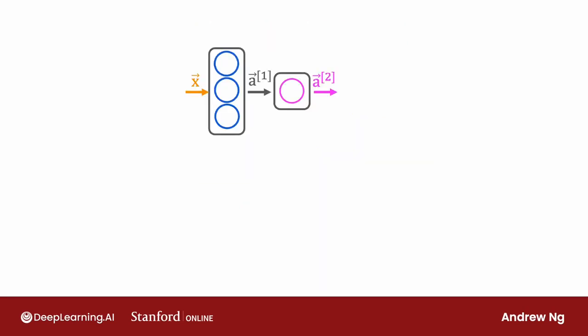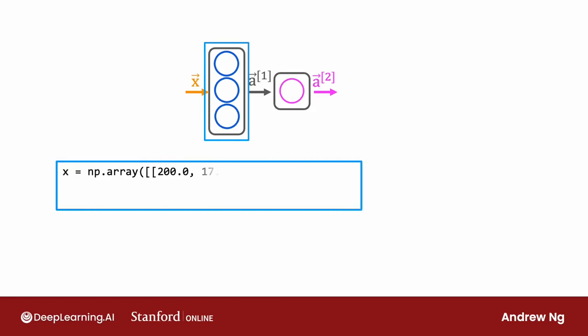We're going to set x to be an array of two numbers, the input features 200 degrees Celsius and 17 minutes. Then you create layer one as this first hidden layer of the neural network as dense. Open parenthesis units=3, that means three units or three hidden units in this layer, using as the activation function, the sigmoid function.